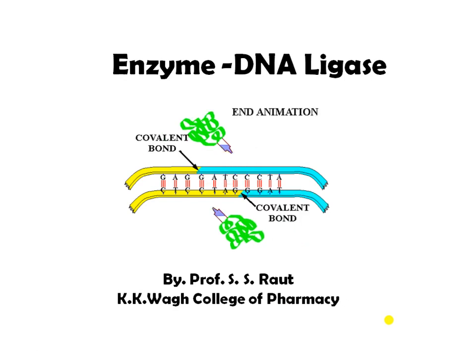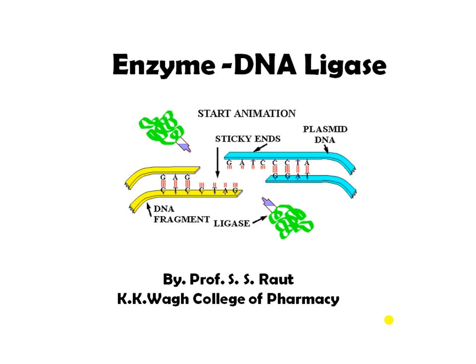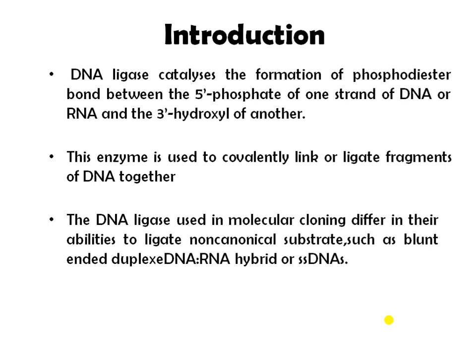DNA ligase is the most frequently used enzyme for the joining of DNA strands. It catalyzes the formation of phosphodiester bond between the 5-phosphate of one strand of DNA or RNA and the 3-hydroxyl of another. This enzyme is used to covalently link or ligate fragments of DNA together. The DNA ligase used in molecular cloning differs in their abilities to ligate non-canonical substrates such as blunt and duplex DNA-RNA hybrid or single strand DNAs.